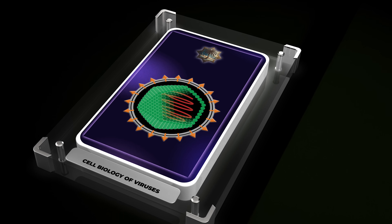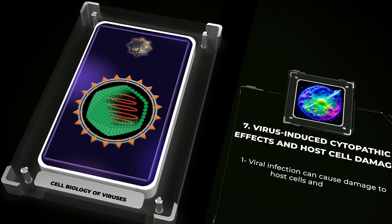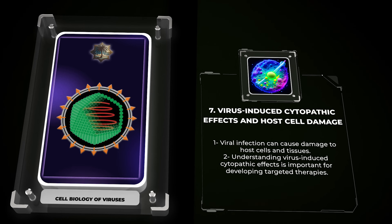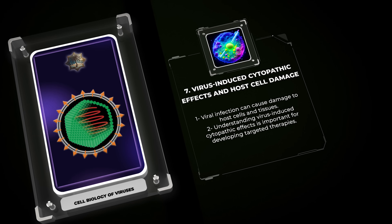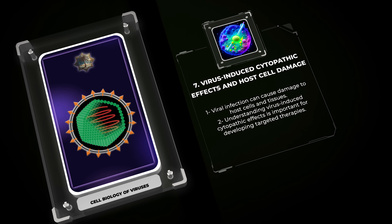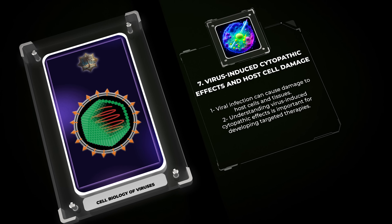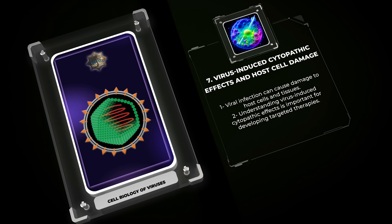During viral infection, viruses can cause significant damage to host cells, leading to tissue destruction and organ dysfunction. These cytopathic effects can result from direct viral-induced cellular damage or the host immune response itself. Viral-induced cytopathic effects can manifest as changes in cell morphology, cell death, or alterations in cellular functions. The specific mechanisms underlying these effects depend on the virus and the infected cell type. Understanding virus-induced cytopathic effects is crucial for unraveling the pathogenesis of viral diseases and developing targeted therapies to mitigate the damage caused by viral infections.